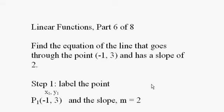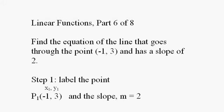Step 1 is to label the point and actually label the slope. We're going to call the point point 1, and this will be x sub 1, this will be y sub 1, and the slope we're going to call m. We do this so it will work in the formula.